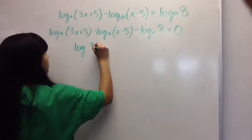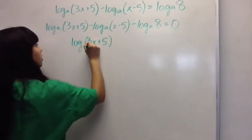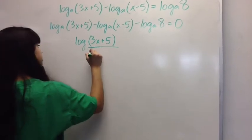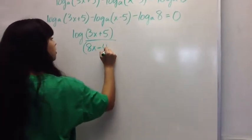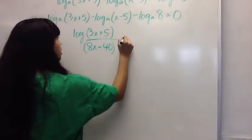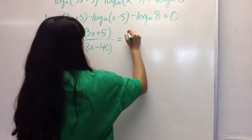Then we're going to get log to the base a of 3x plus 5 divided by x minus 5 times 8, which would be 8x minus 40, set equal to 0.